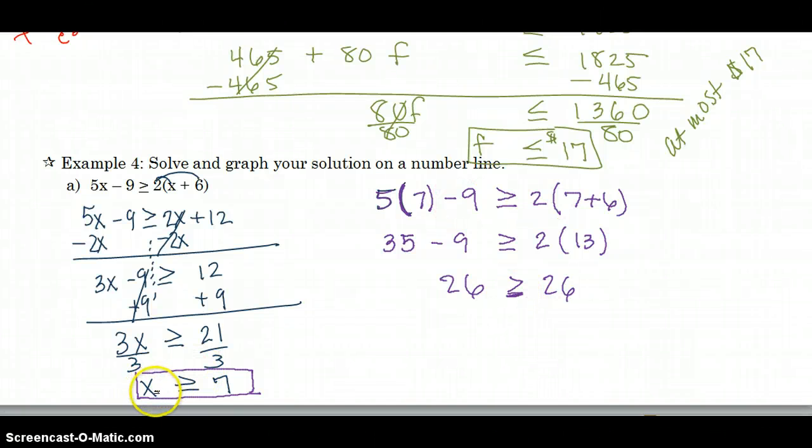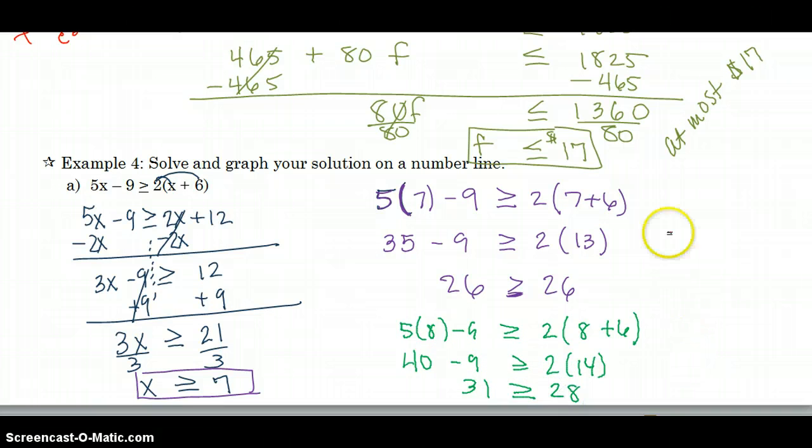If I picked a number greater than 7, which probably is what I should have picked, like 8. 8 times 5 is 40. Let's do that one just real quick in our heads. That would give us 40. If I plugged in 8, is that greater than or equal to 2 times 8 plus 6? So 2 times 14. Is that greater than or equal to 40 minus 9? So 31 should be greater than 28. And it is. So it checks out. So any way you slice it, x should be greater than or equal to 7.